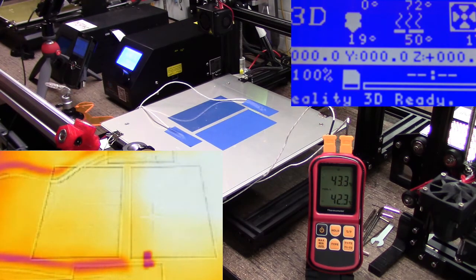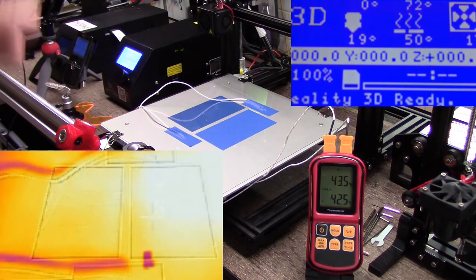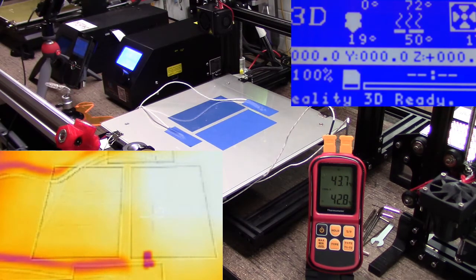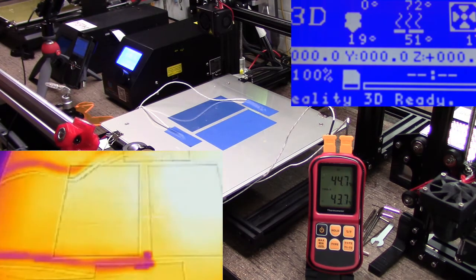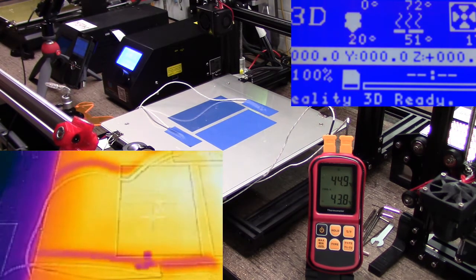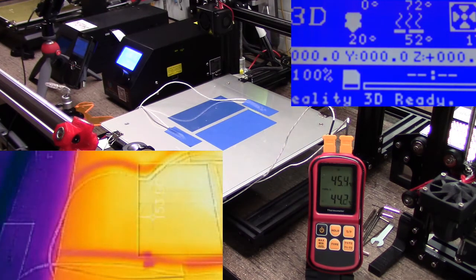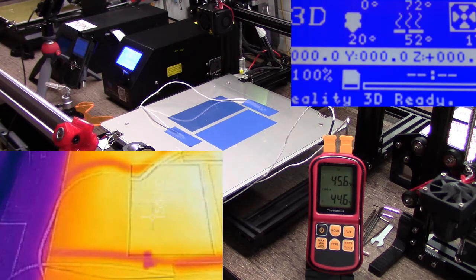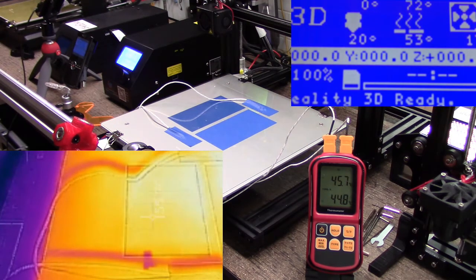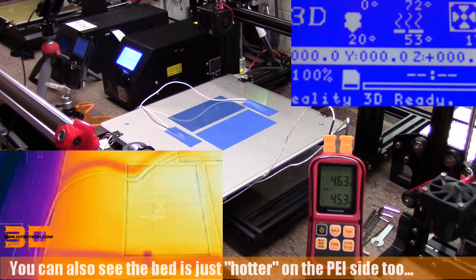And I'm running about 53 so for some reason from an infrared standpoint I seem to be running higher, quite a bit higher on the PEI. However on the actual bed I'm running about 54 and it says I'm about 52 and this says I should be 44 so I wonder.